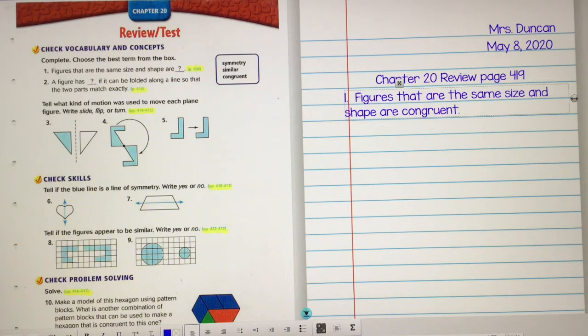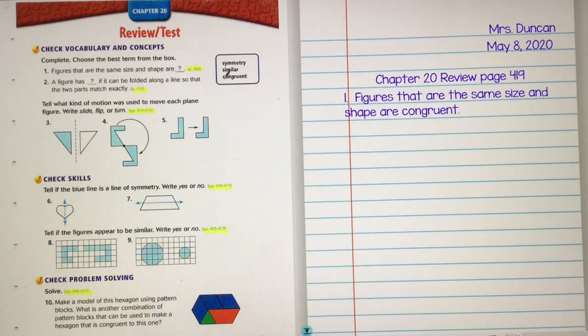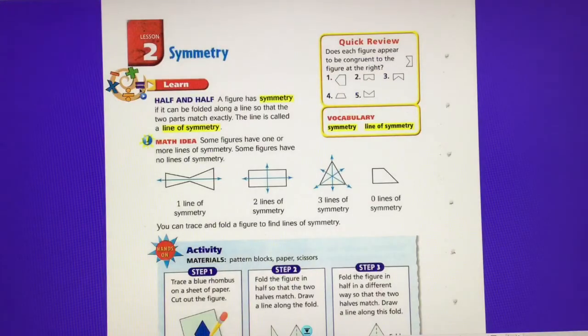Okay, and then we go to number two. A figure has blank if it can be folded along a line so that the two parts match exactly. So I'm down to similar or symmetry because I already took out congruent. So I'm actually going to cross that out. Okay, and it says to go to page 410. If I can fold along a line so that the two parts match equally. Here's one of those vocabulary words. A figure has symmetry if it can be folded along a line so that the two parts match exactly. Right there, that's the definition. We're good to go.